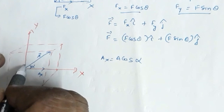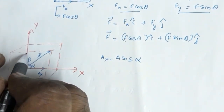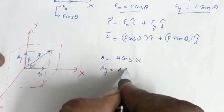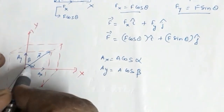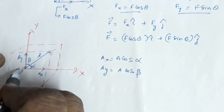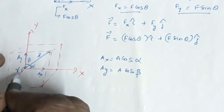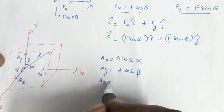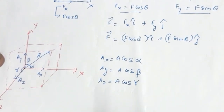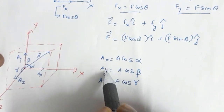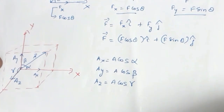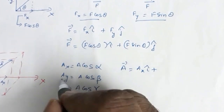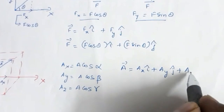Similarly, if this vector makes an angle beta with the y axis, then ay — the component of a along the y axis — is equal to a cos beta. And if vector a makes an angle gamma with the z axis, then az equals a cos gamma. So these are the components of a along the x, y, and z axes, and I can write vector a equal to ax i cap plus ay j cap plus az k cap.